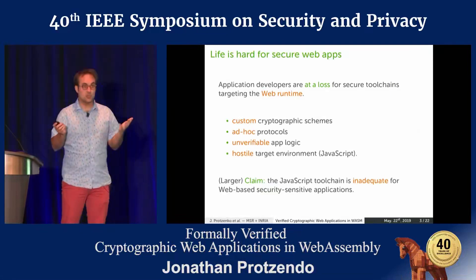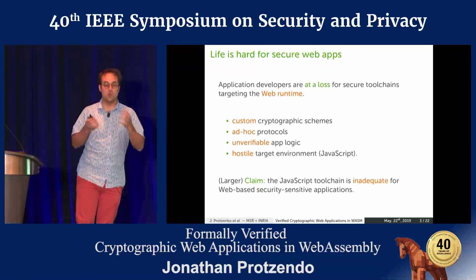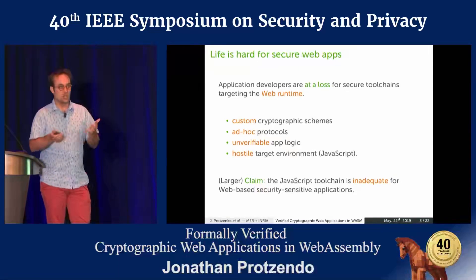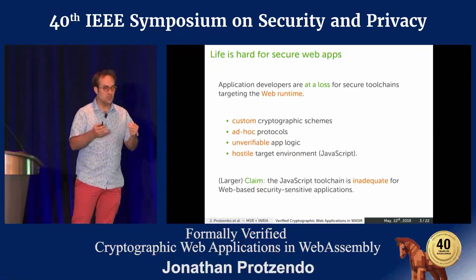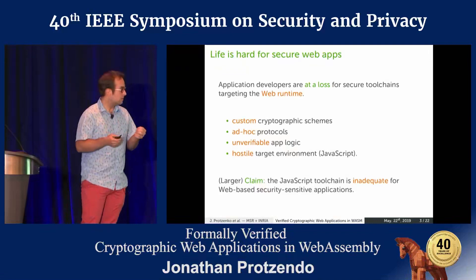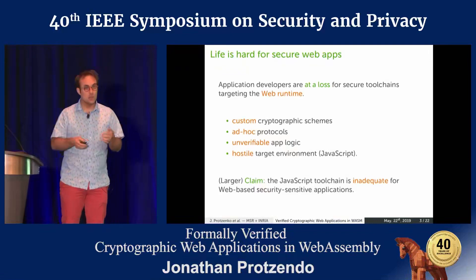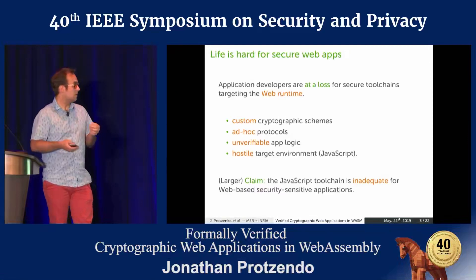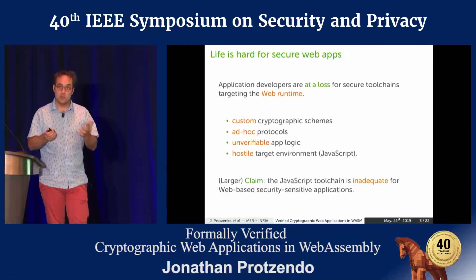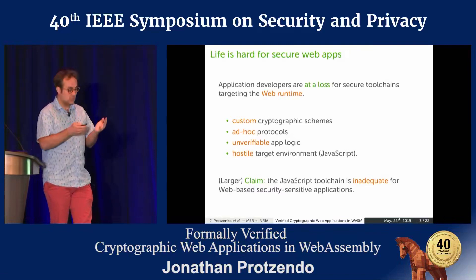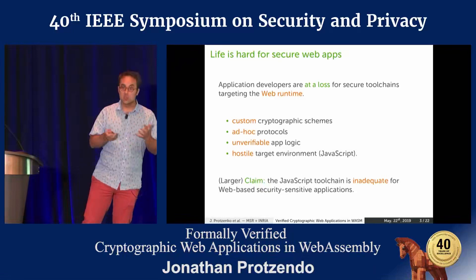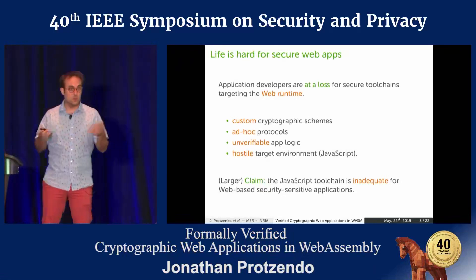Oftentimes, because you're targeting JavaScript, it is extremely hard to reason about what your application is doing. You have a language whose semantics are notoriously challenging — that has led to work such as defensive JS that are trying to compensate for the weaknesses in the semantics. You have no isolation guarantees. Anyone can modify your prototype. I claim that JavaScript is a hostile target environment for security-sensitive applications, and that the JavaScript toolchain is inadequate when you want to have strong security guarantees for the programs you compile to your web runtime environment.